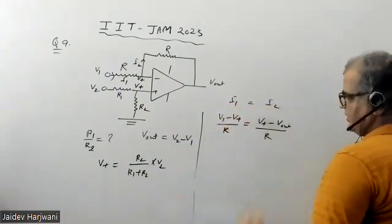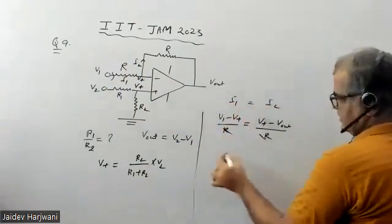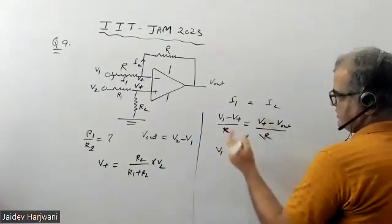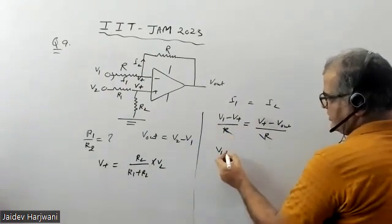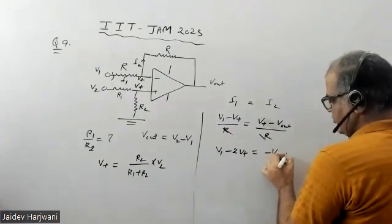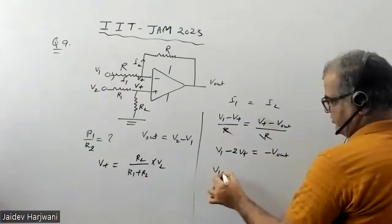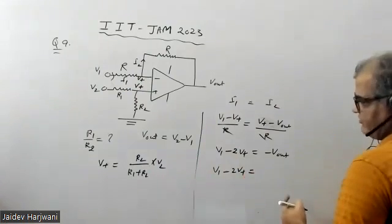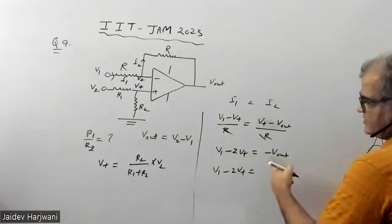So I1 equals I2. I can write like this, so R cancels. Now I have V1 minus, I can take this V+ to the left side, so this will give me minus 2V+ equals V output.